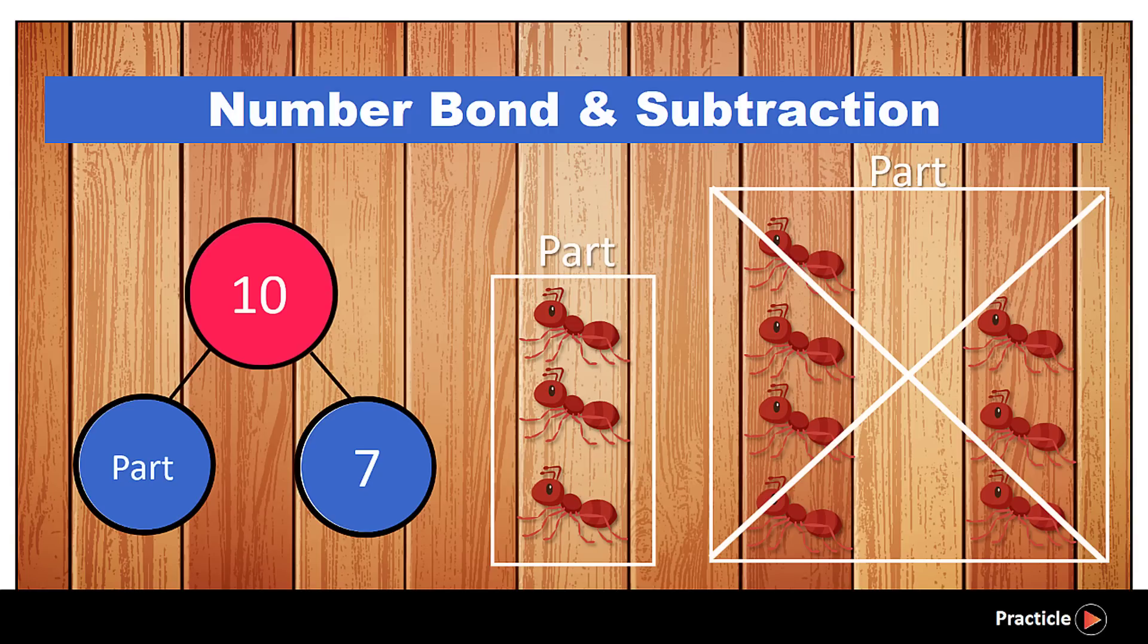So how do we find the number of ants that make up the other part? Well, that's where subtraction comes in. To find how many ants make up the other part, we will take everything we have, which is the whole, and subtract one of the parts from it. And when we do that, the other missing part will be left.